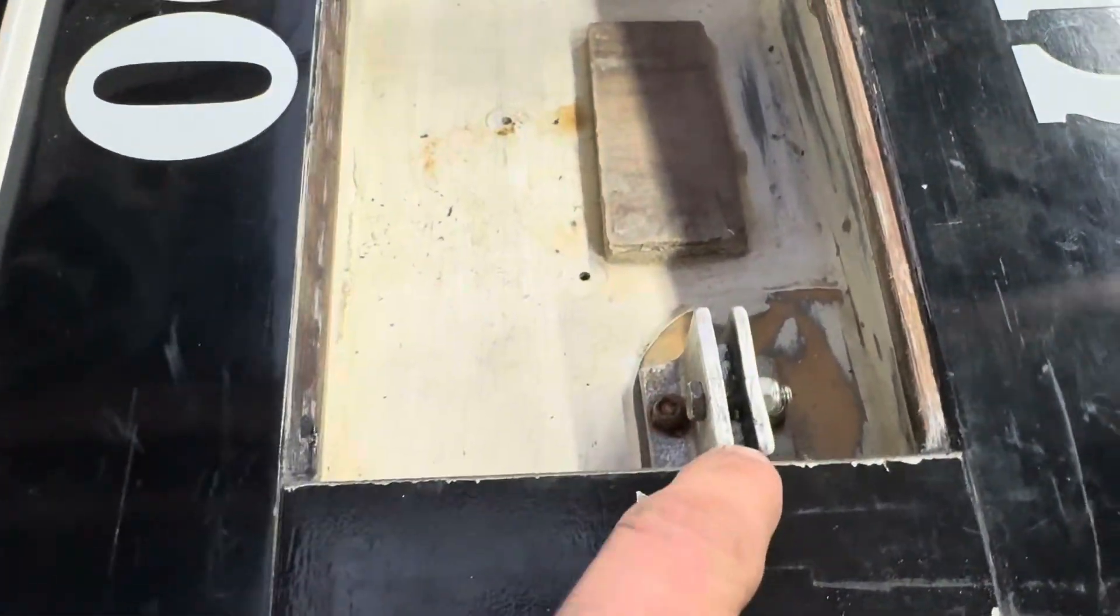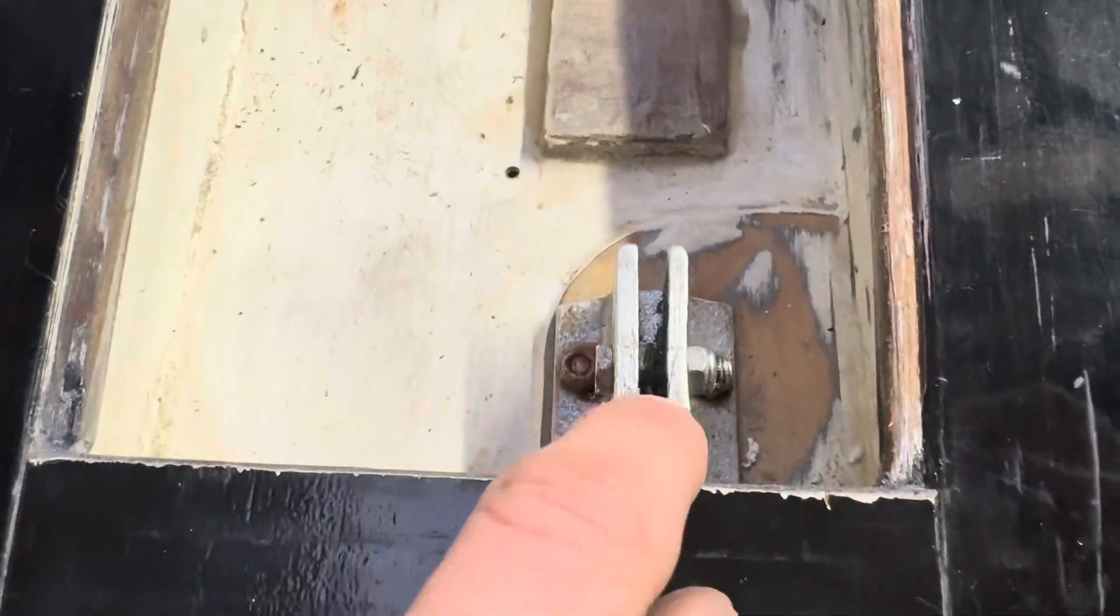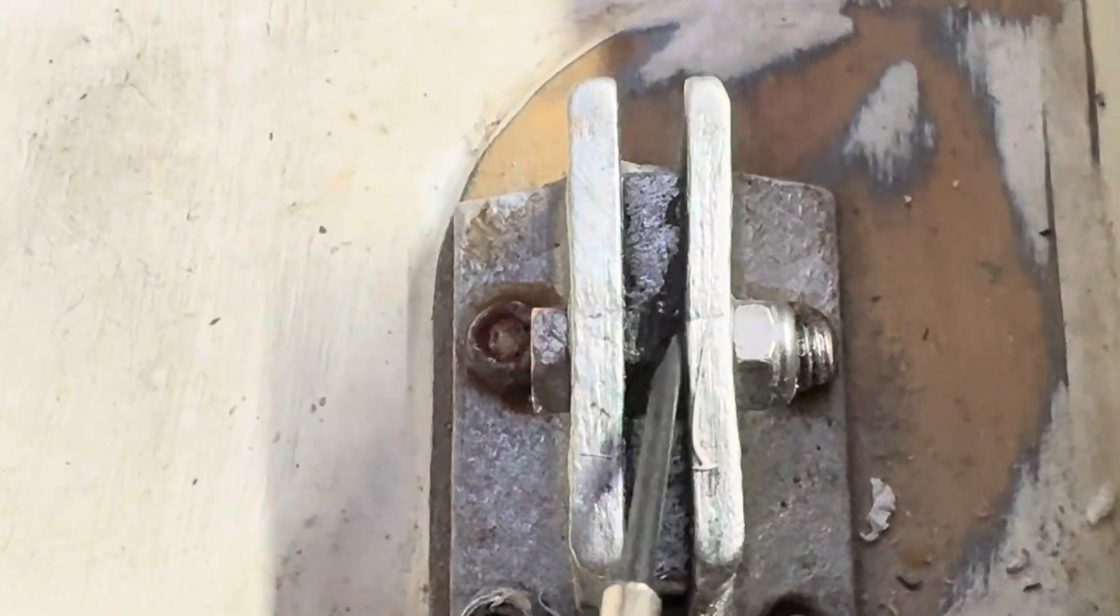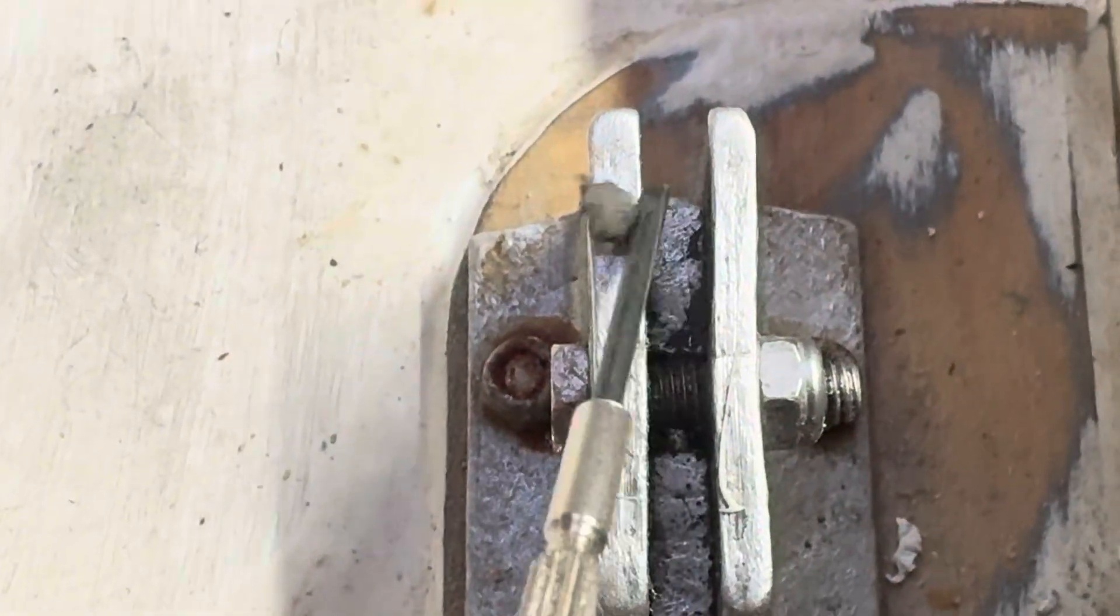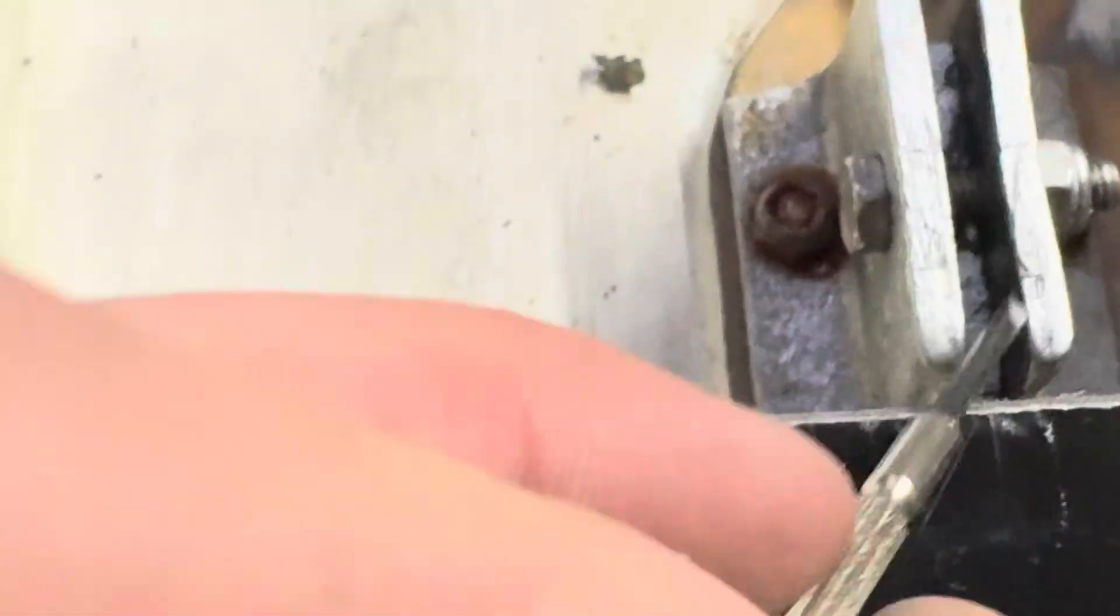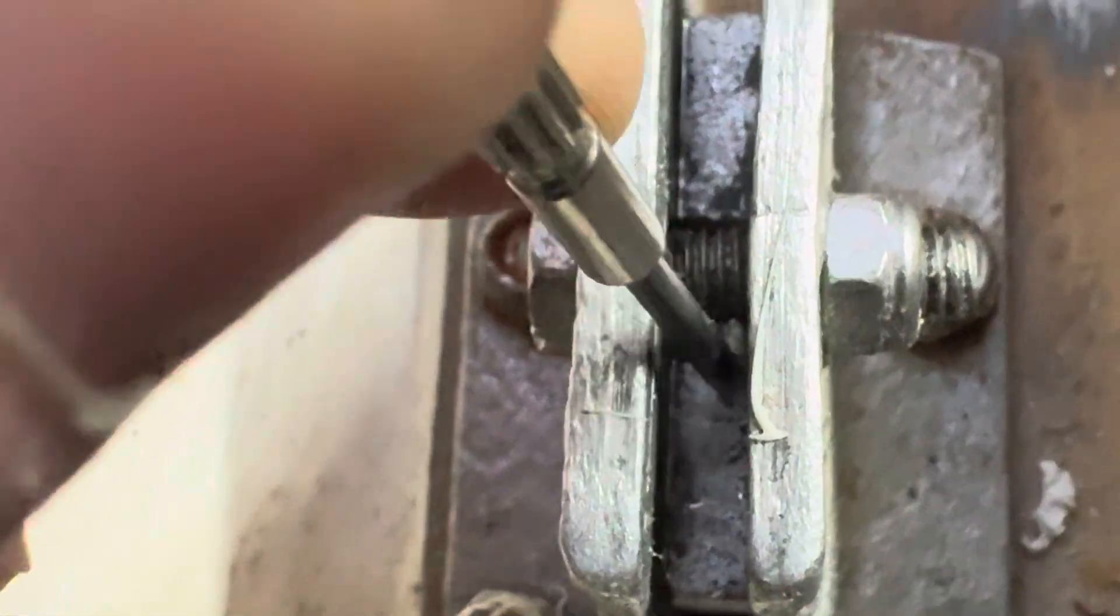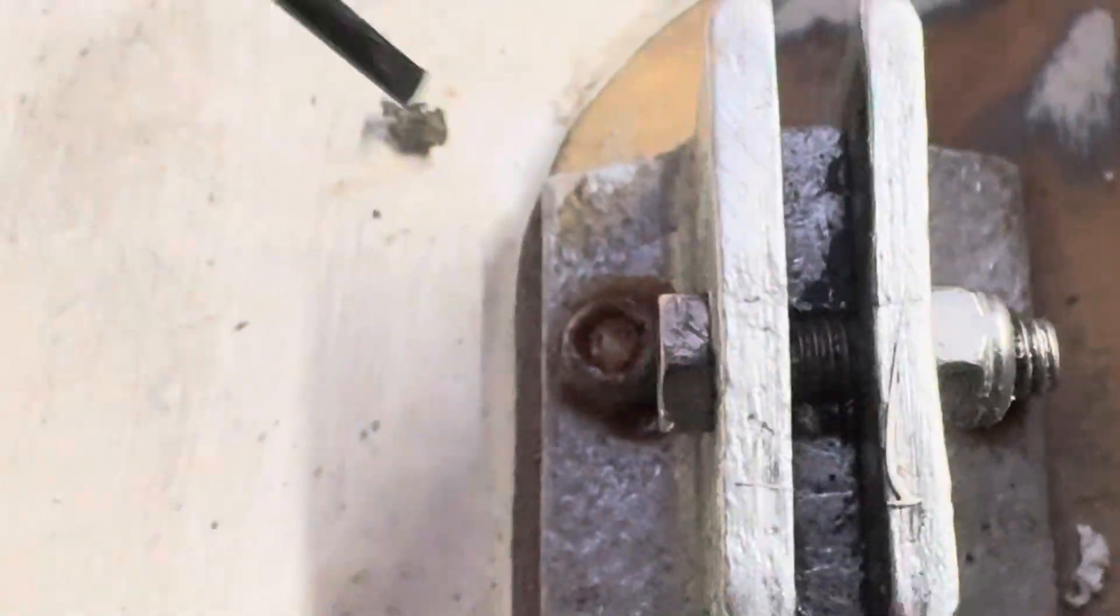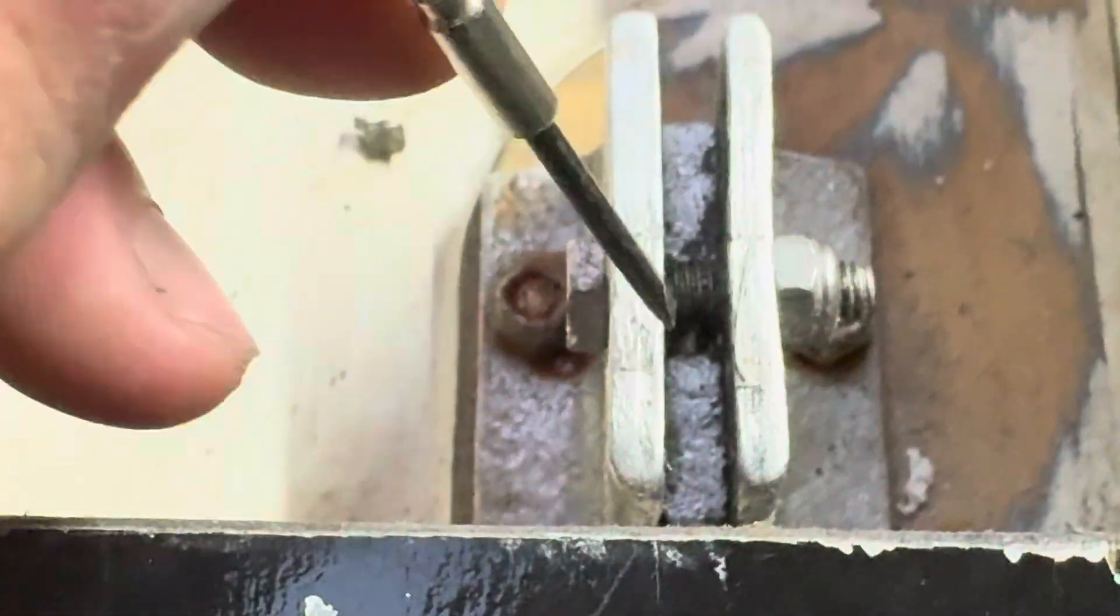I'm going to have to make a new one of these brackets here because, as you can see, that right there is the bolt. This bit of metal there should be over the bolt, not underneath. So we have to make a new one of those up as well.